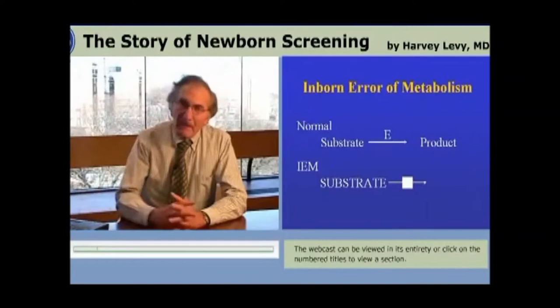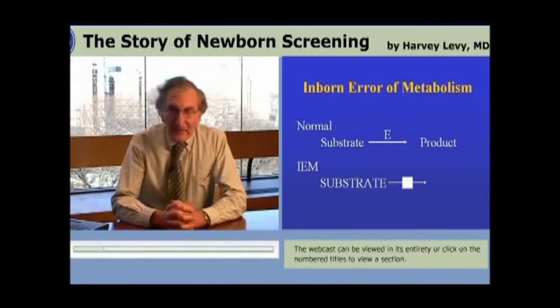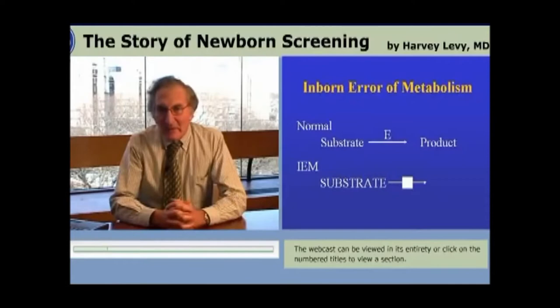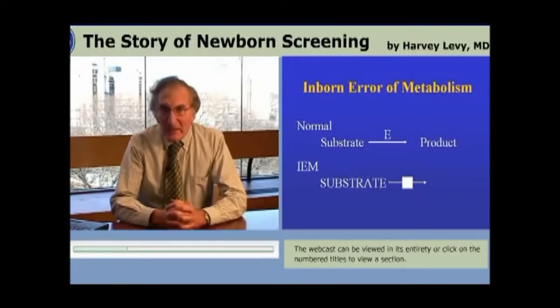Garrod conceived of inborn errors of metabolism on the following basis: the metabolites in the body, whether we take them in as part of food or whether we make them, have to be converted to other metabolites. This slide depicts them as a substrate to be converted to a product, and he knew that the catalyst for that conversion was an enzyme. He said that there are certain individuals born with what he called an inborn error of metabolism — an inborn defect in their ability to convert the substrate to the product, a defect that we now know is in the enzyme.